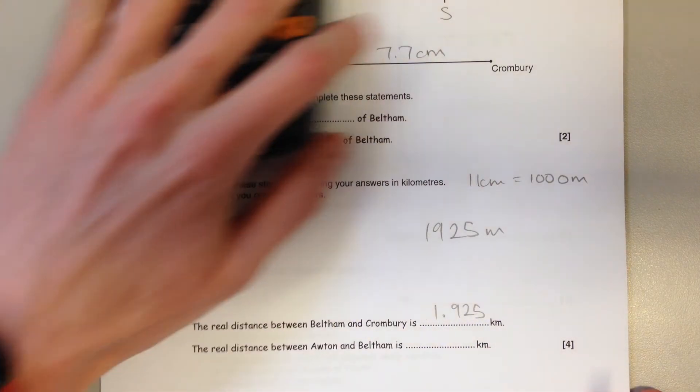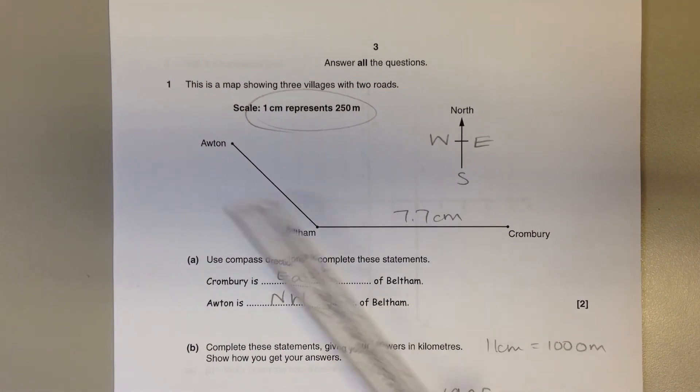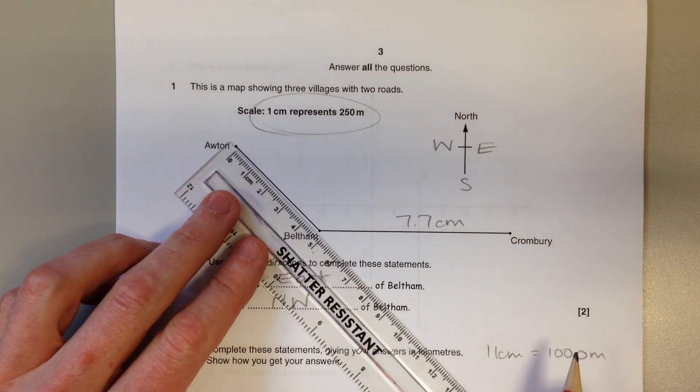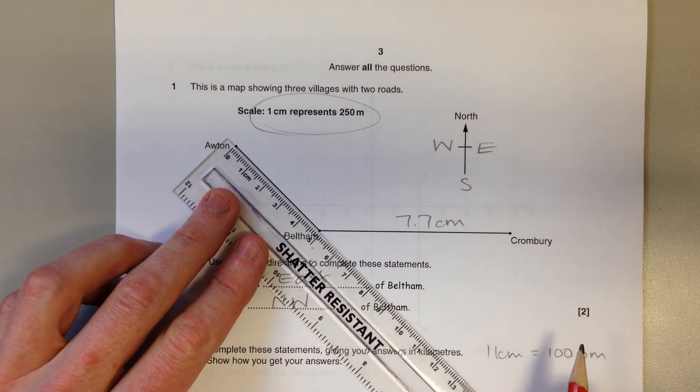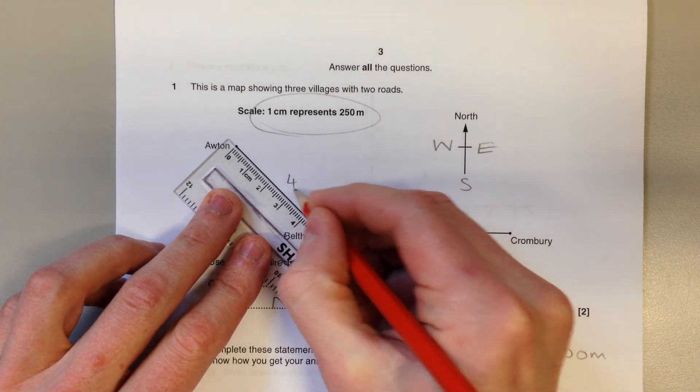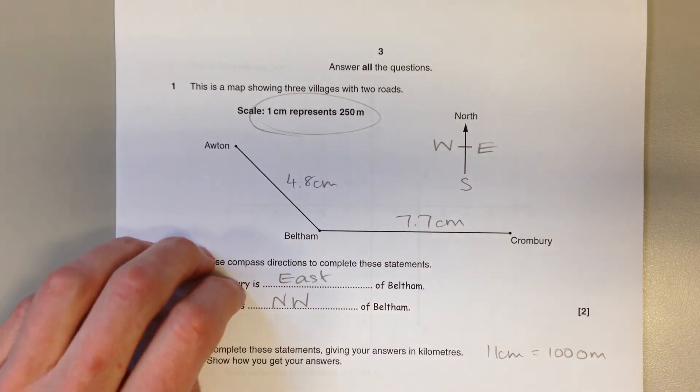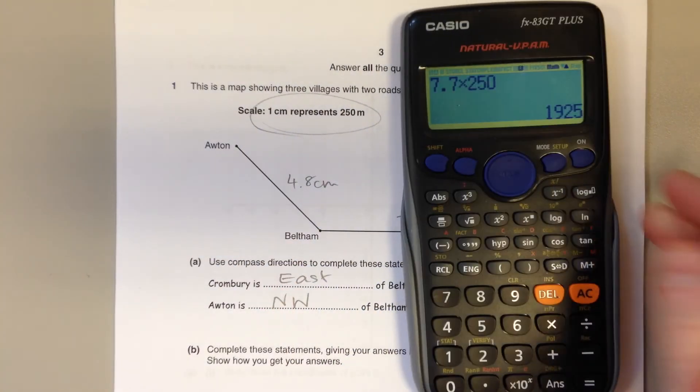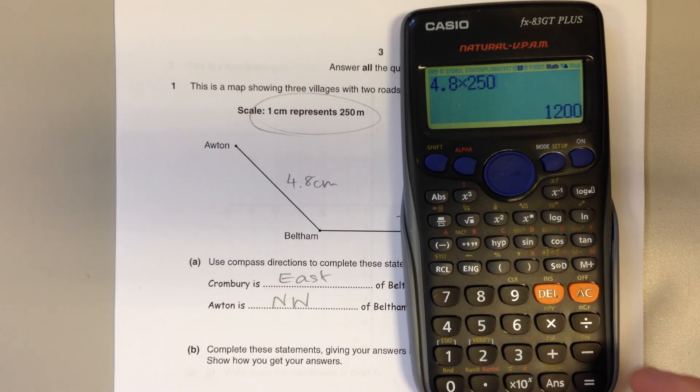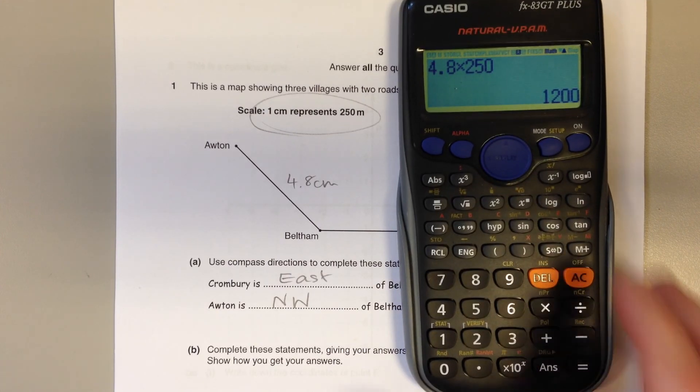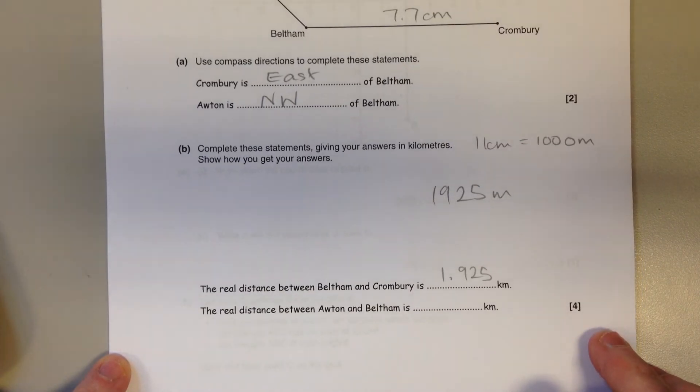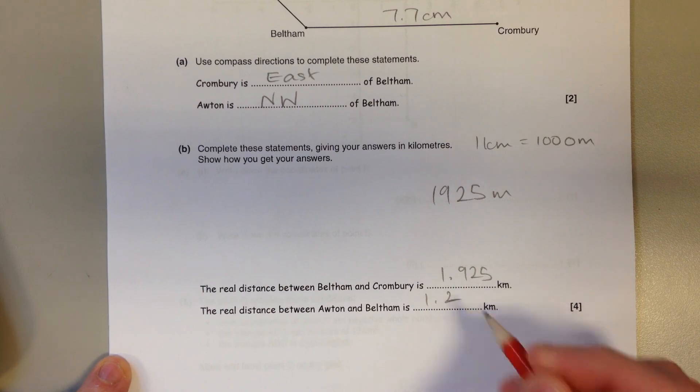And then repeating the process between the other two towns, we've got a distance of 4.8 centimeters. That is 4.8 lots of 250 meters, which is 1,200 meters, which is 1.2 kilometers.